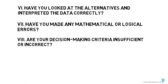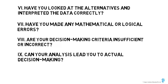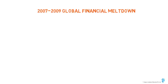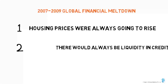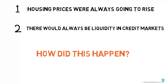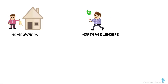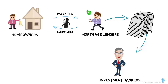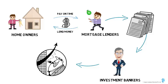Are your decision-making criteria insufficient or incorrect? Do you need more or better data? Can your analysis lead to actual decision-making? There hasn't been a better example of the misuse of analytics than the 2009 global financial meltdown. Before the crisis, there were two assumptions everyone considered safe: one, housing prices would always rise; two, there would always be liquidity in credit markets. Both assumptions would soon be challenged and yet remained uncorrected in most analytical models.